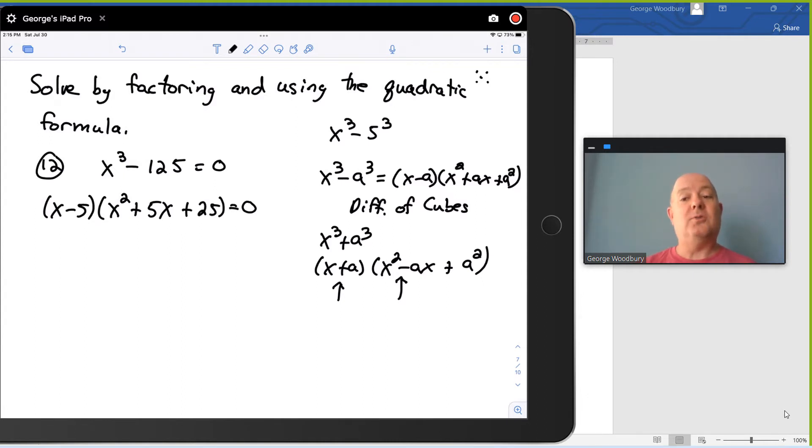Now we can use the zero factor property, and the first solution we can peel off right away: x equals 5. For the other one, we've got a quadratic factor that we still need to solve, and that can be solved by using the quadratic formula.